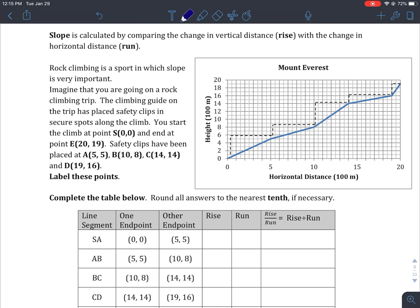Rock climbing is a sport in which slope is very important. Imagine you're going on a rock climbing trip. The climbing guide has placed safety clips in secure spots along the climb. You start the climb at point S which is (0,0) and end at point E which is (20,19). Safety clips have been placed along the route at A, B, C, and D, and we're asked to label those points.